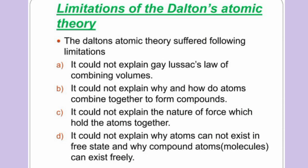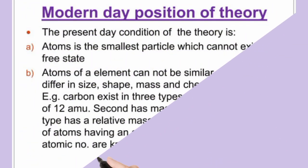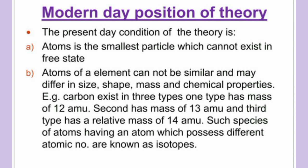The modern atomic theory revises these positions. (a) Atoms are the smallest particles and cannot exist in a free state. (b) Atoms of the same element might not be similar — they may differ in size, shape, mass, and chemical properties. For example, carbon exists in three types: one with a mass of 12 atomic mass units, a second with 13 atomic mass units, and a third with 14 atomic mass units.